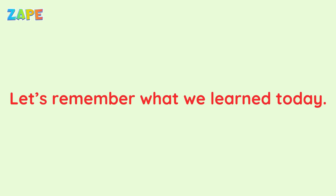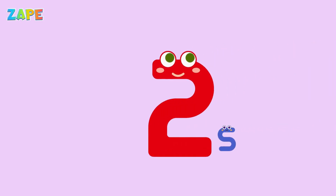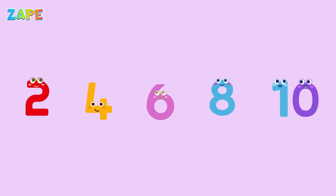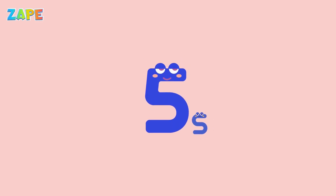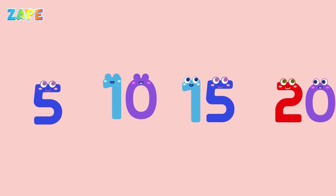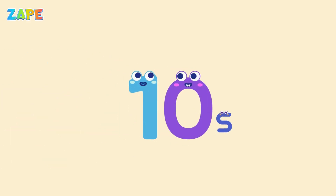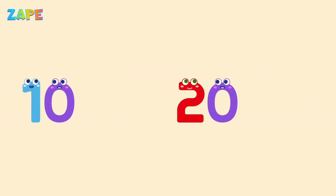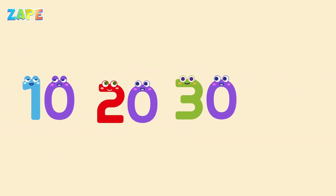Let's remember what we learned today. Count by twos: 2, 4, 6, 8, 10. Count by fives: 5, 10, 15, 20. Count by tens: 10, 20, 30, 40.